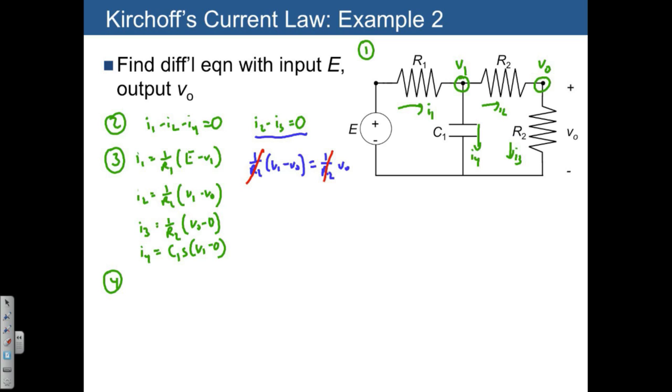We're left with the relationship V1 equals 2 times VO. Once we know V1, we automatically know VO.